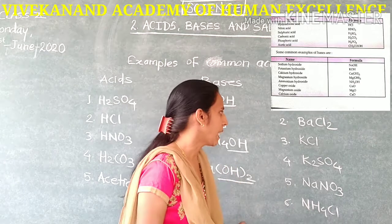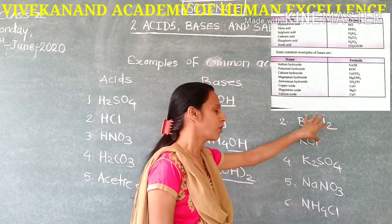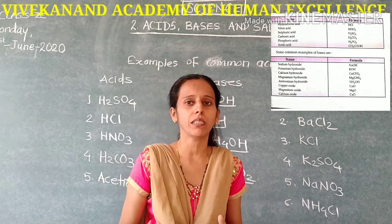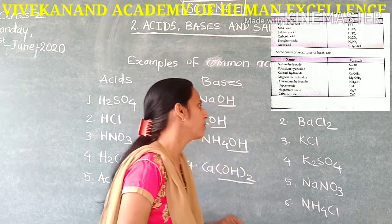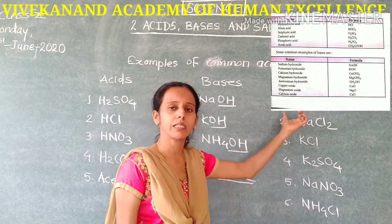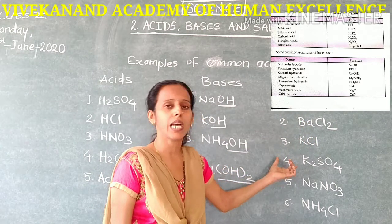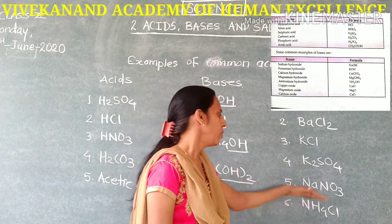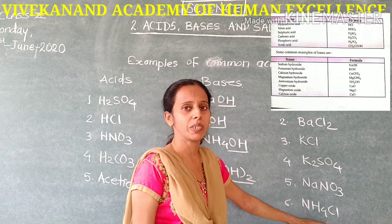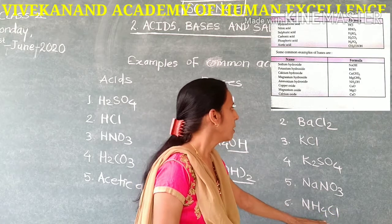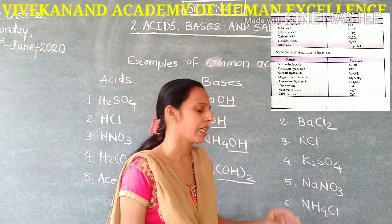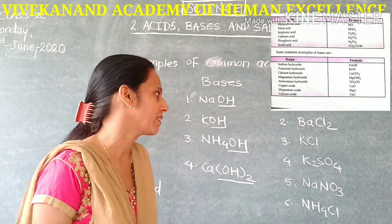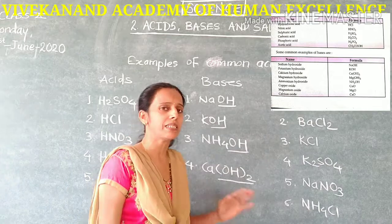It does not mean that all salts contain chlorine — it is not like that. When acid and bases come together, they form salt and water. This salt is the combination of acid and base, with water as a byproduct. There are many examples in our environment of such salts: magnesium chloride, barium chloride, barium sulfate, lead sulfate, ammonium chloride, etc.